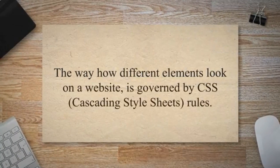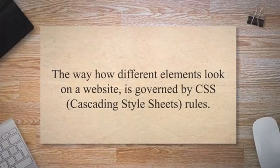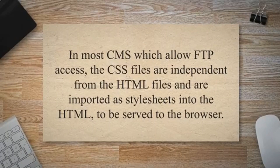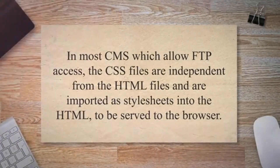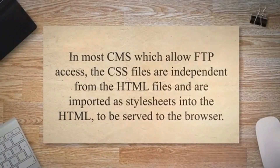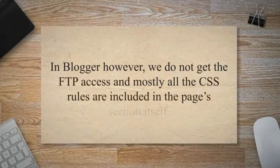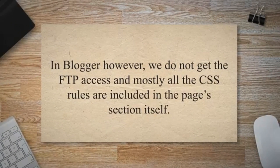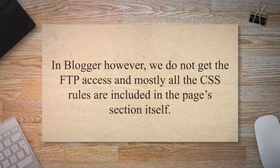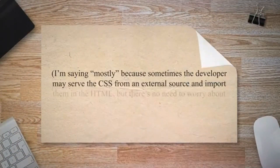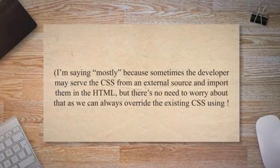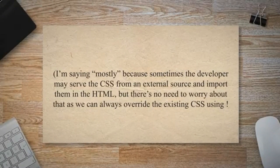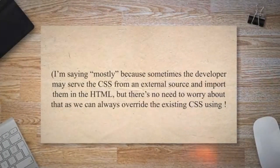The way different elements look on a website is governed by CSS (cascading style sheets) rules. In most CMS which allow FTP access, the CSS files are independent from the HTML files and are imported as style sheets into the HTML to be served to the browser. In Blogger, however, we do not get FTP access and mostly all the CSS rules are included in the page's head section itself. Sometimes the developer may serve the CSS from an external source and import them in the HTML, but there's no need to worry as we can always override the existing CSS using !important.